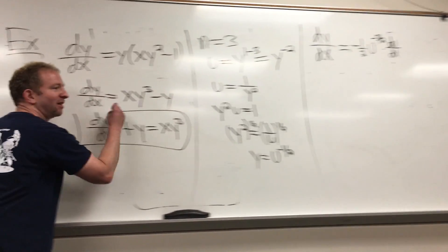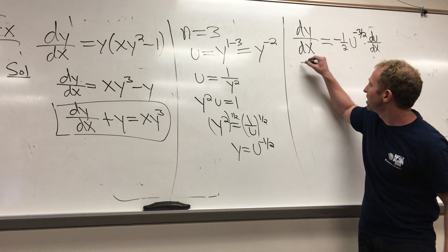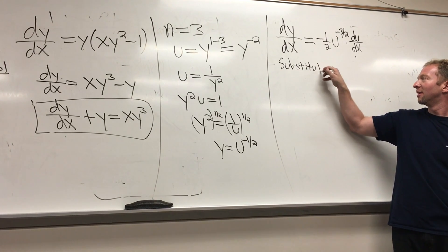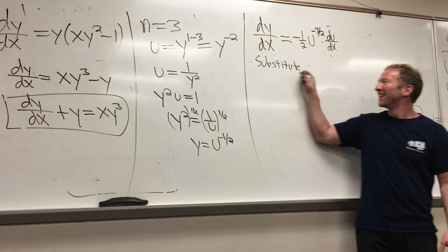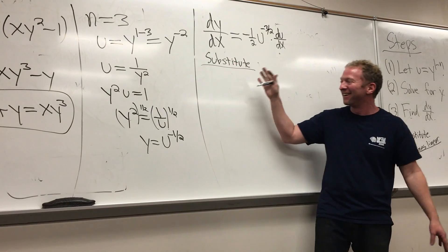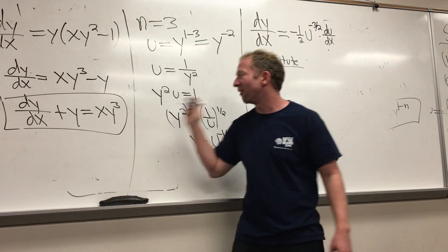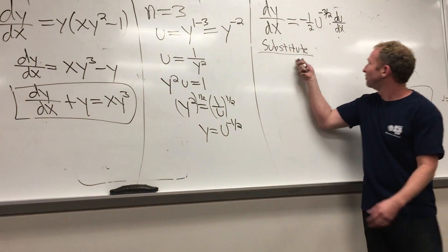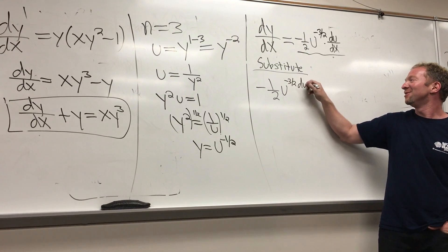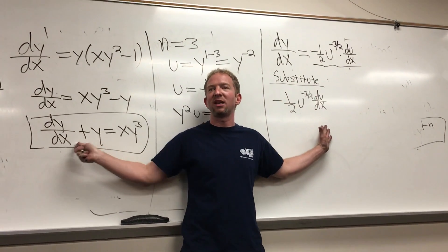Now we're ready to go back and substitute everything. dy/dx is going to be this: negative 1/2 · u^(-3/2) · du/dx. We've replaced dy/dx with this, making that substitution. And then plus y — but we know what y is.